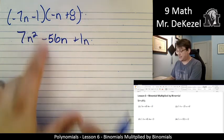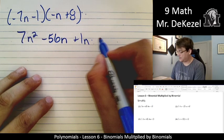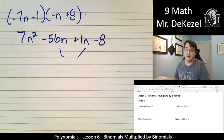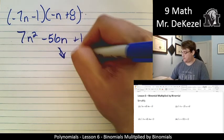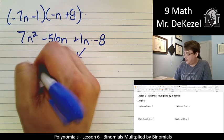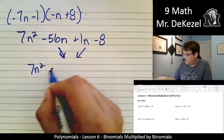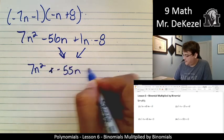And then our last terms, -1 times 8. That's just -8. No variables to bring along. We're going to combine our like terms, which, again, is our middle ones. We've got 7N² - 56N + 1N. That's -55N - 8.